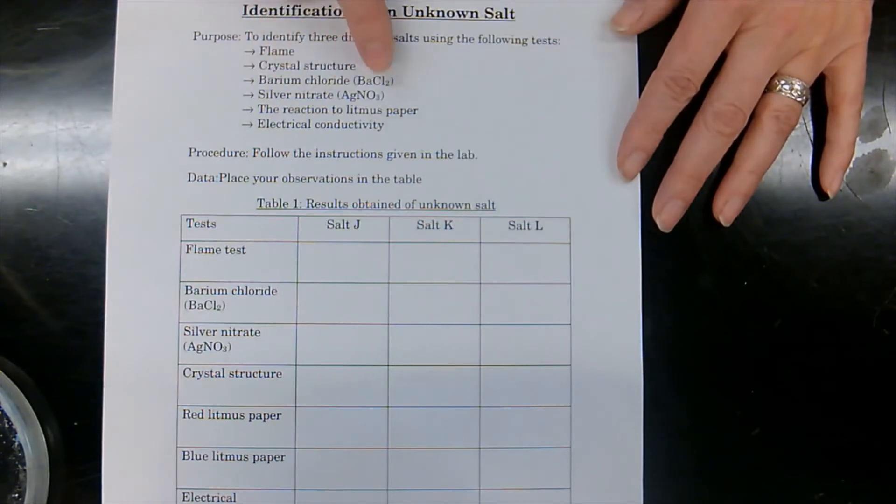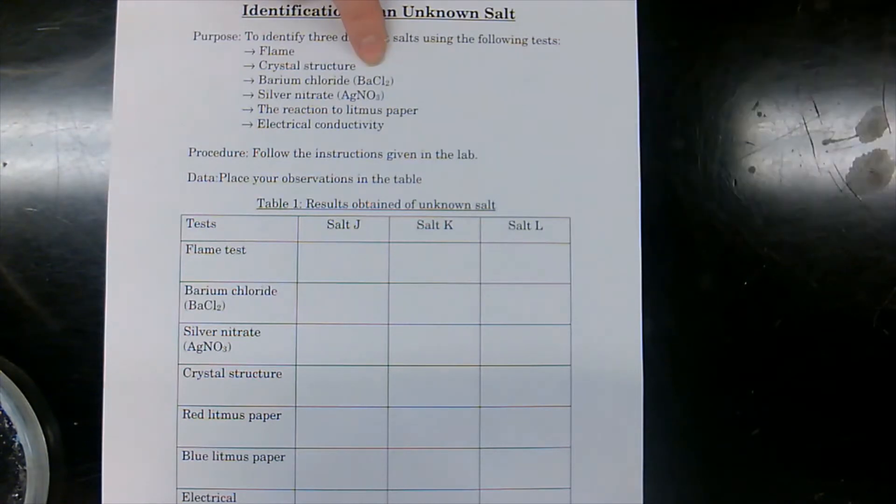The barium chloride, what it's going to do is that we're going to see if it creates a precipitate. If it creates a precipitate, that means that the ion, one of the two parts of the salt, actually has a sulfate in it.